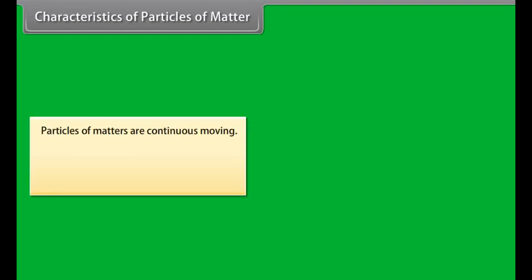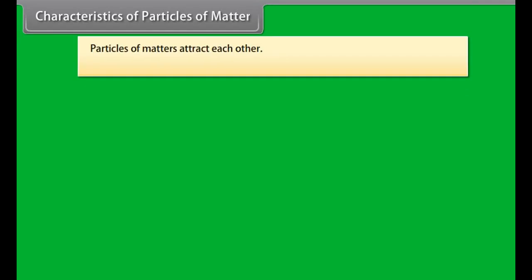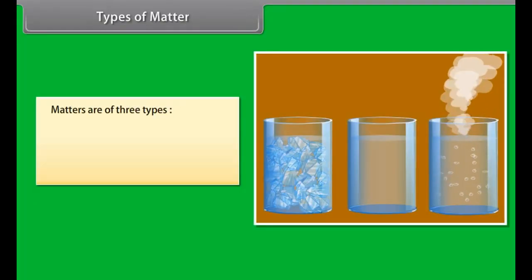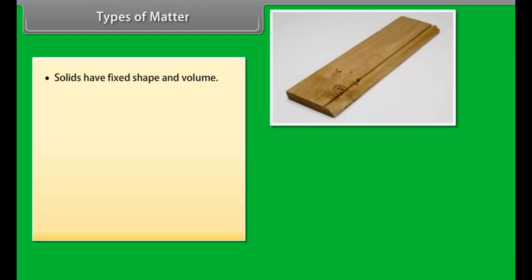Matter is made up of different particles called molecules. For example, sand is made up of sand particles. Particles of matter have enough space. When we make tea or coffee, particles of one type of matter get into the spaces between particles of the other.